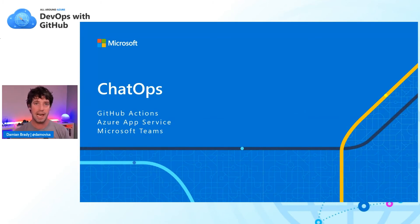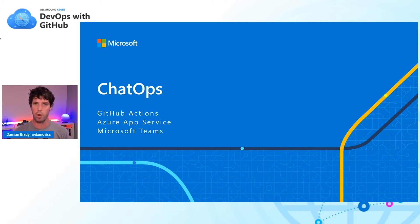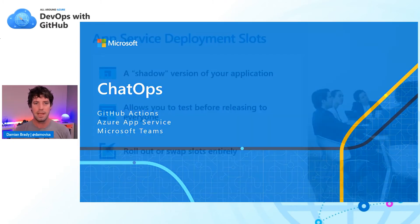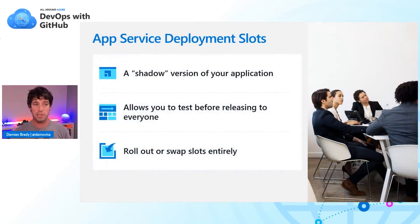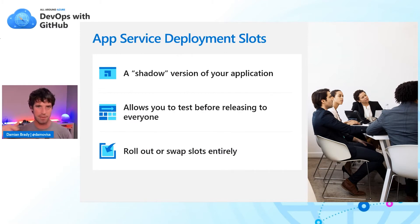A really cool way of doing this is chat ops. This is a term used for using your communication hub — in our case Teams — to manage the workflow of deploying your application. To do this, we're going to use App Service deployment slots. You can think of deployment slots as kind of a shadow version of your application — a separate version of your production app that lives in roughly the same place, doesn't need production traffic, and lets you test before pushing to production.